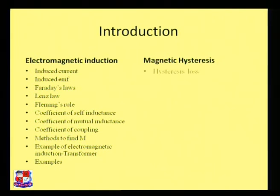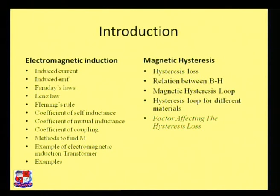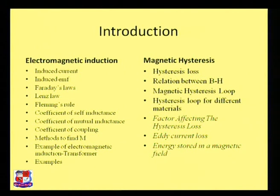In magnetic hysteresis, we will cover: hysteresis loss, the relation between B and H, the magnetic hysteresis loop, the hysteresis loop for different materials, factors affecting hysteresis loss, eddy current loss, energy stored in a magnetic field, and finally examples related to magnetic hysteresis.